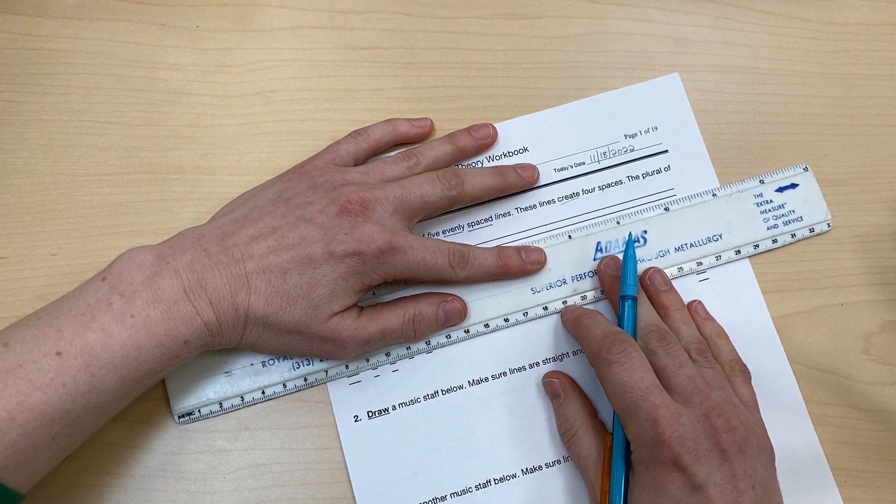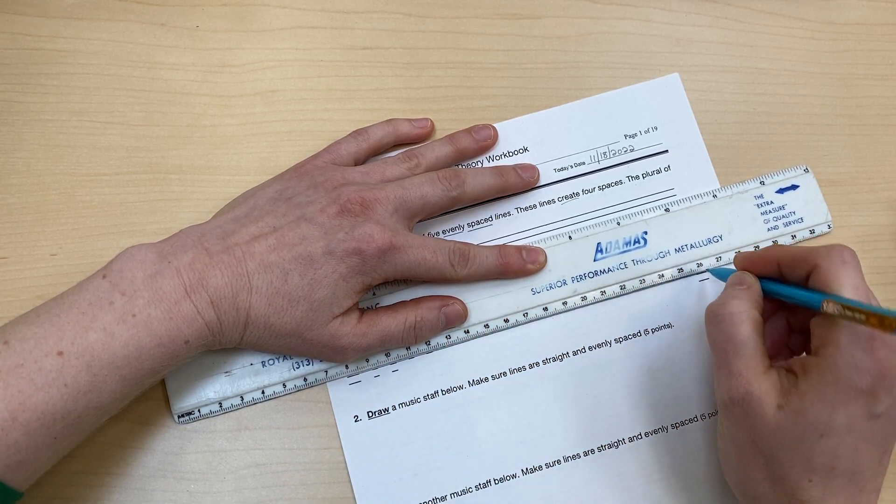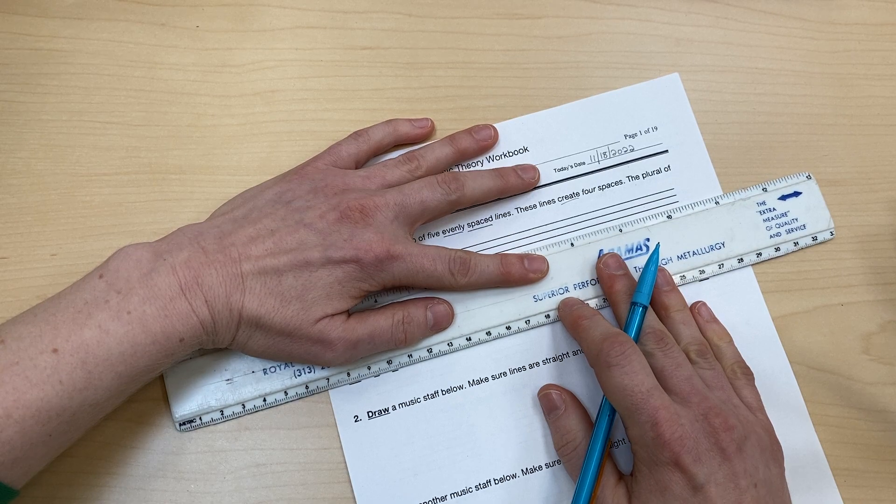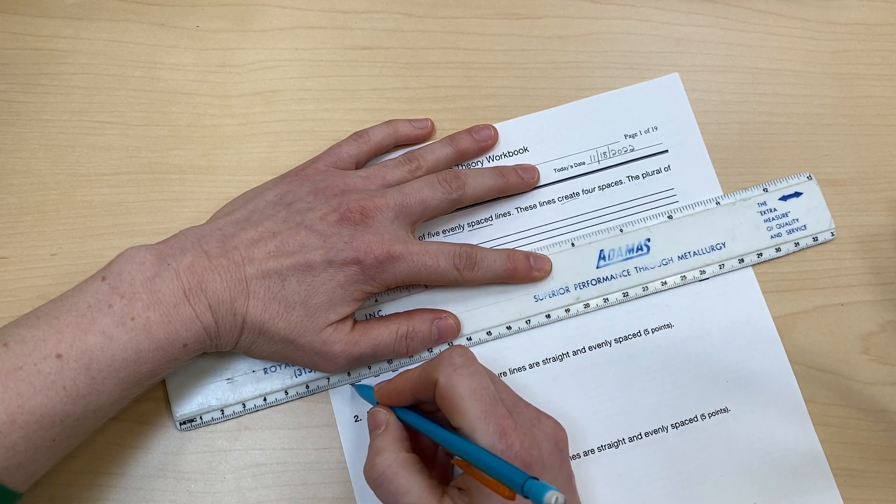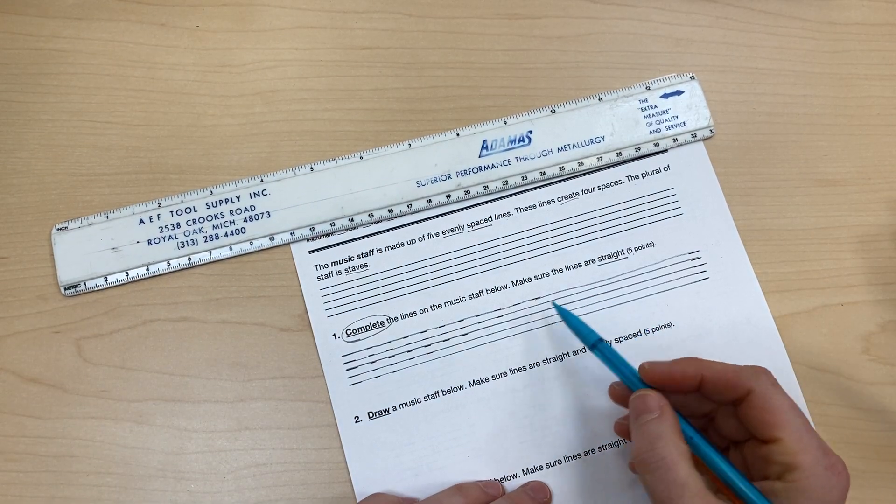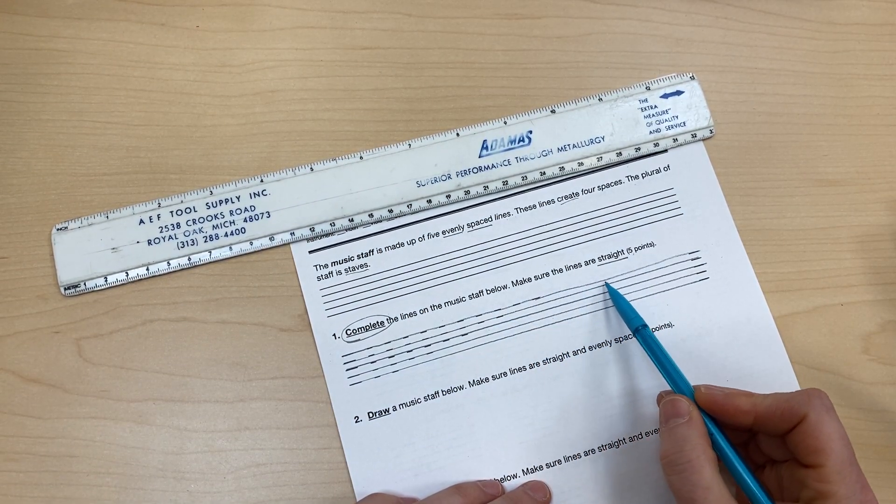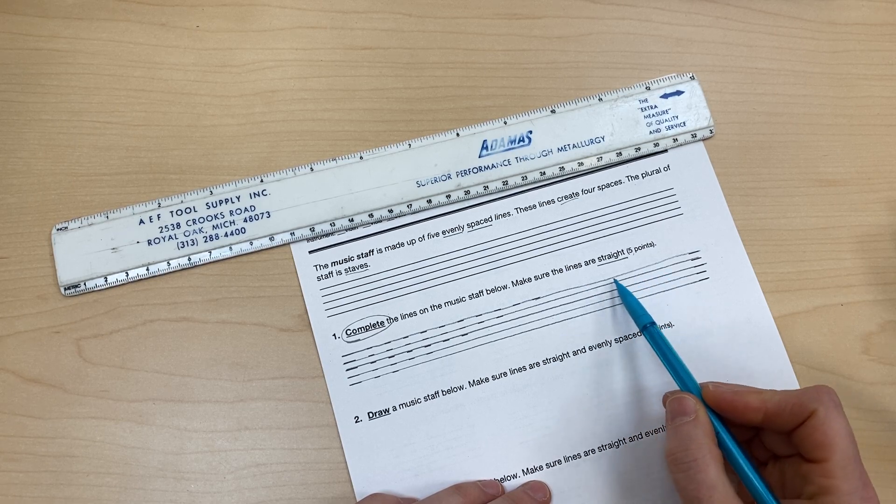Now, like I said, some of you might not need to use anything. You might be able to draw straight, even lines without anything, but I can't. That's why I'm doing this. Then when I look at it, I have straight, even lines. Now, you can see the one where I didn't use a ruler. This is not really good right here.